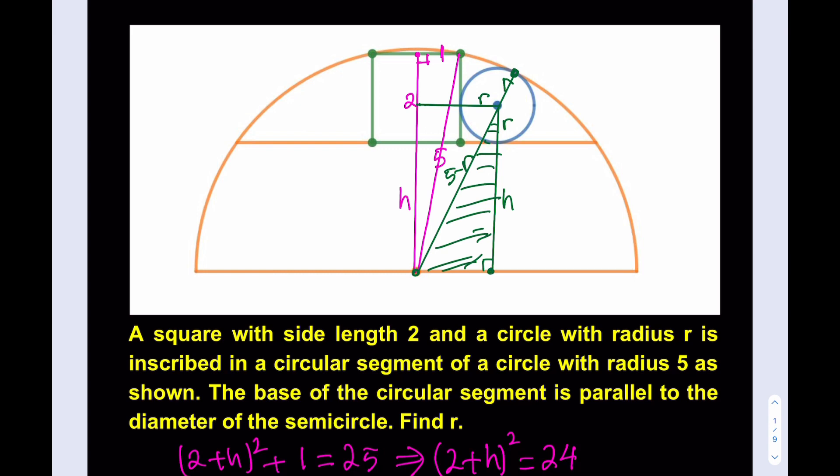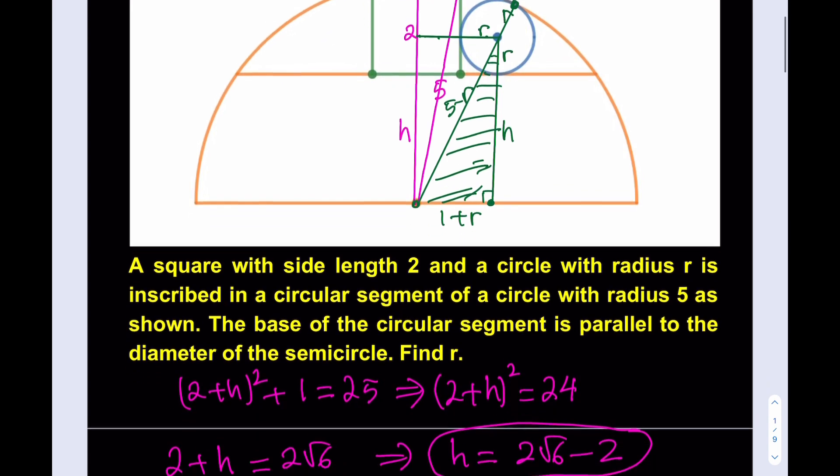Okay, the base of this right triangle that I just shaded is going to be 1 + r because it's parallel to the segment, so this is going to be 1 + r. Awesome.